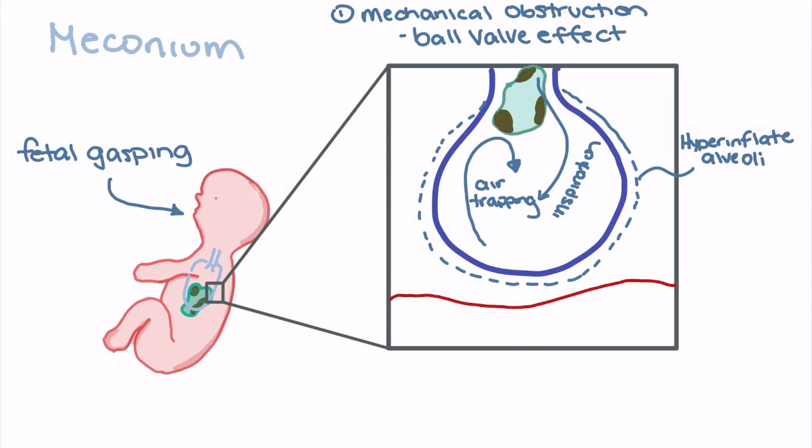The second most common complication of meconium aspiration for neonates is pneumonitis. Pneumonitis occurs in 50% of all meconium aspirations and is defined as inflammation of the airways as a result of irritants found in meconium.